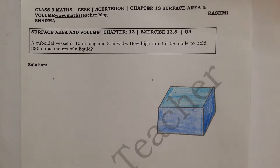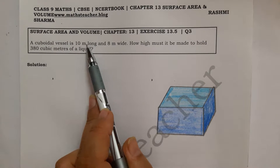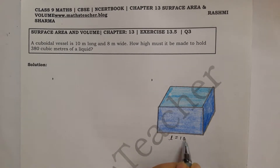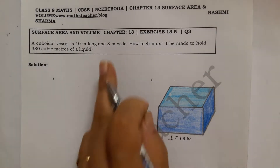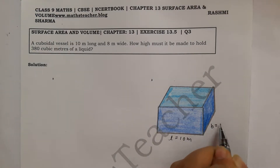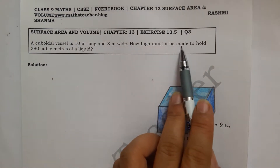Hello viewers, welcome to my channel. I am Rashmi and I am a maths teacher. Let us solve question number 3. A cuboidal vessel is 10 meters long — that means its length is 10 meters — and 8 meters wide, that means its width is 8 meters.